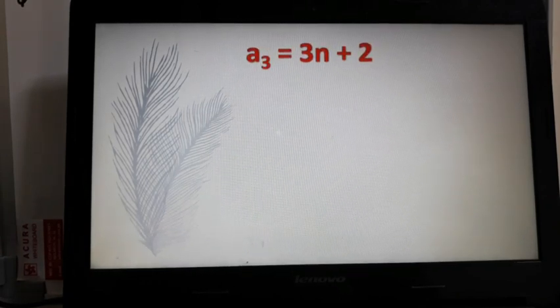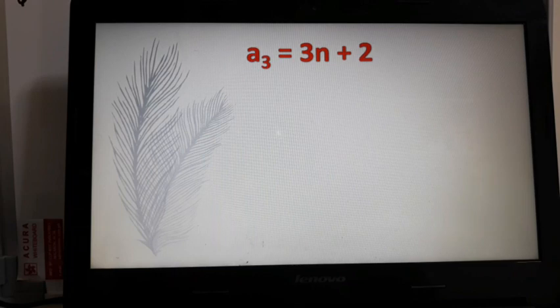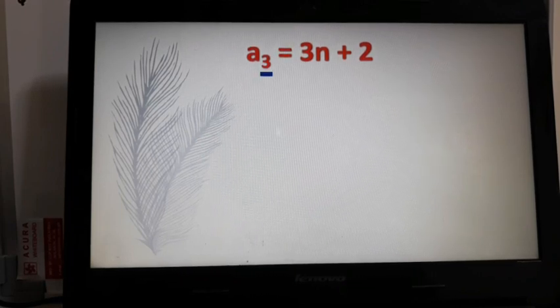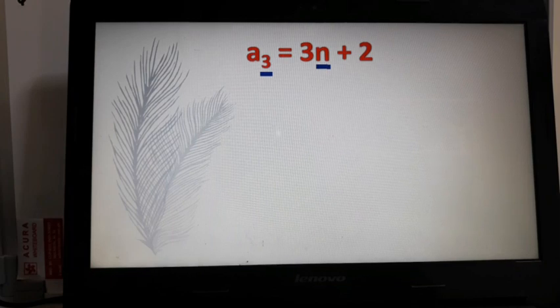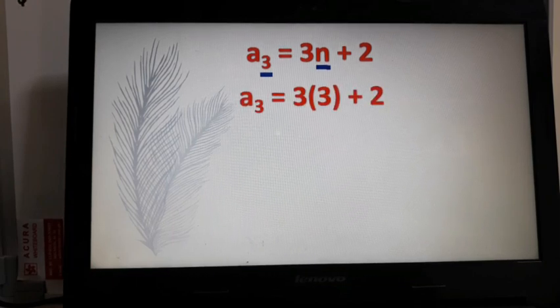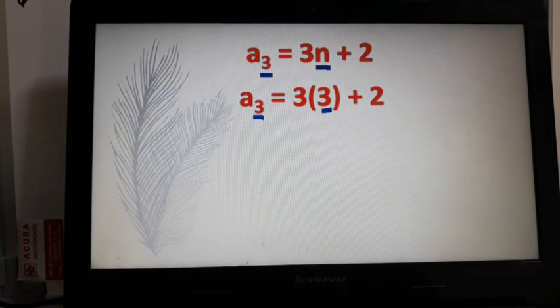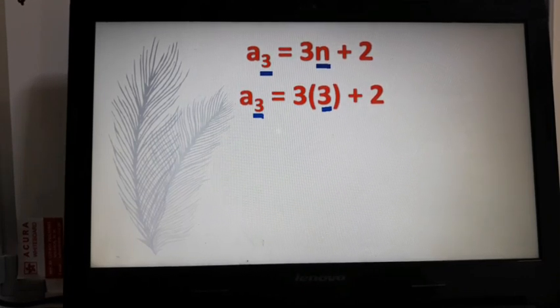Let's solve for a_3. For our third term, the value of our n is equal to 3. So that means your n will be replaced by 3. Where did it come from? From a_3, the value of our n.